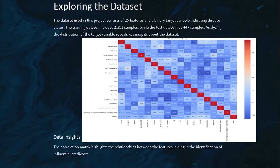When it comes to the dataset that was given, we had two datasets: training and testing. The training dataset had about 3,500 samples and 25 features, while the test data had about 447 samples.